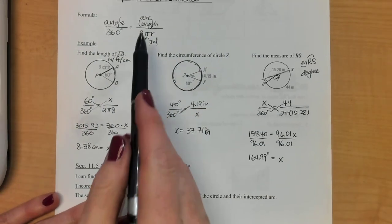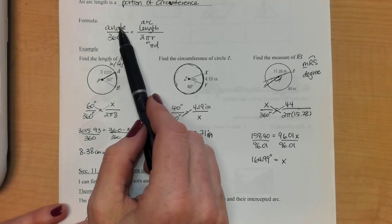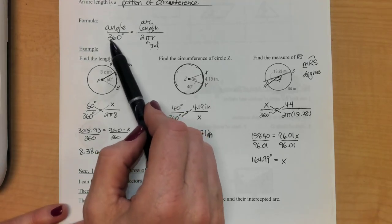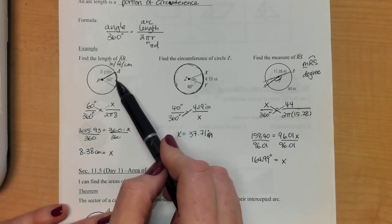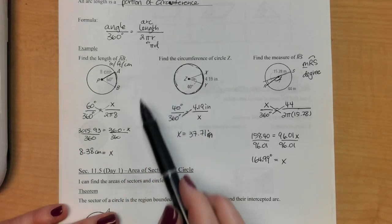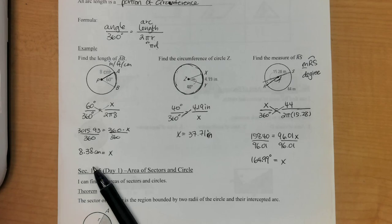So this is our arc length formula. We always have our angle over 360. That number never changes. And then arc length, that's always the measure on the outside, over your circumference, 2πr or π diameter.